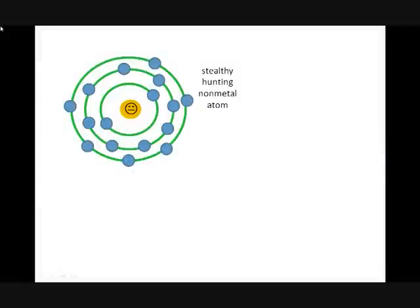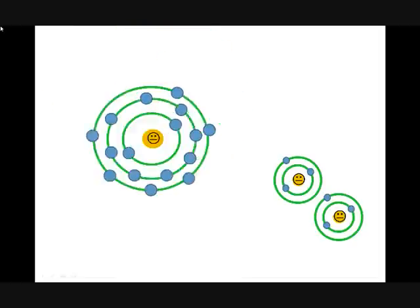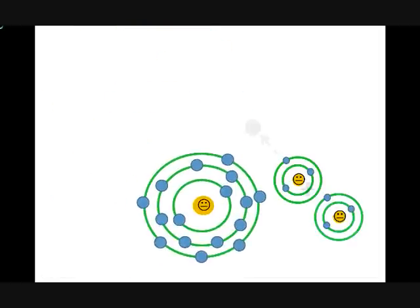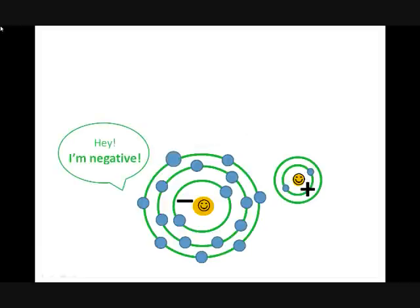Instead of giving away electrons, non-metals go hunting for more electrons. They want to gain enough electrons to get to their octet. When an atom gains electrons, it becomes negatively charged. This means it has formed a negative ion and that's called an anion.